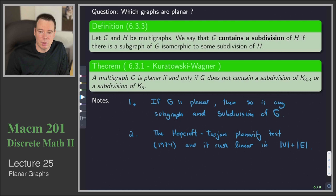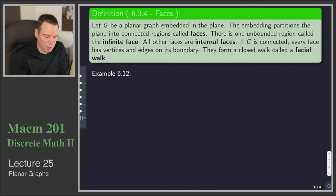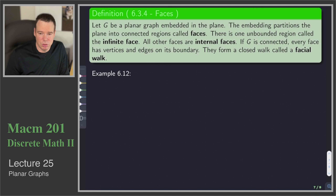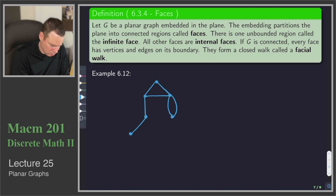From this point forward in this lecture we're assuming all the graphs we encounter are planar, and so now we can start defining things for those graphs. If we've got a planar graph then the embedding partitions the plane into connected regions called faces. There is one unbounded region called the infinite face, and all other faces are called the internal faces. If G is connected, every face has vertices and edges on its boundary and they form a closed walk called the facial walk.